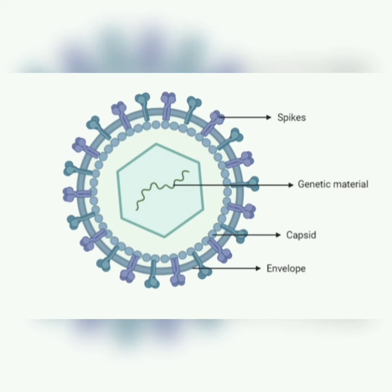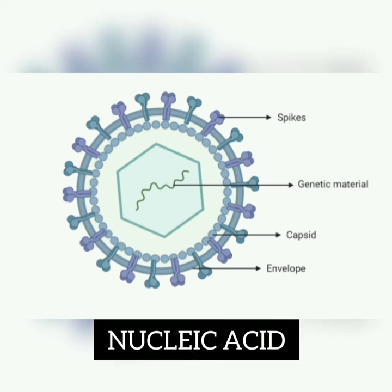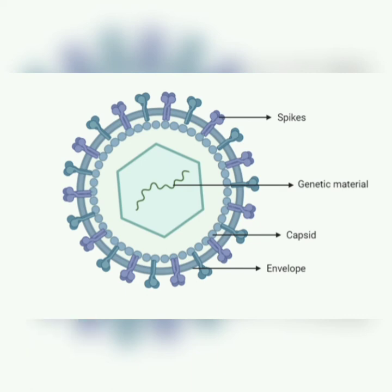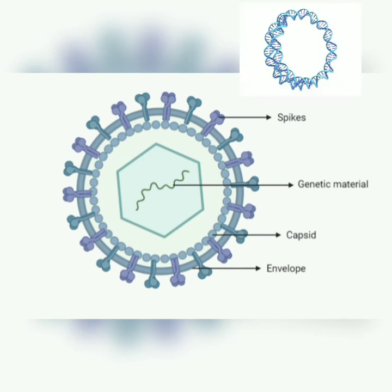Moving on to nucleic acids. The genetic material of a virus is either DNA or RNA and never both, as already mentioned. The viral nucleic acid can be double-stranded, single-stranded, linear, circular, or segmented.